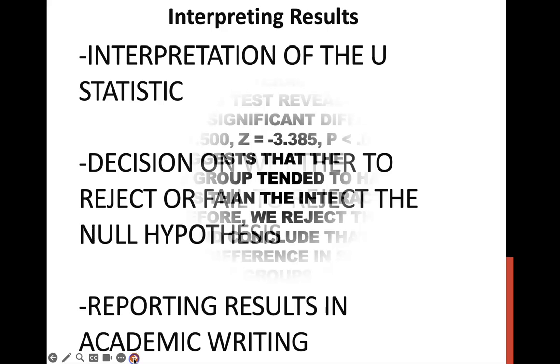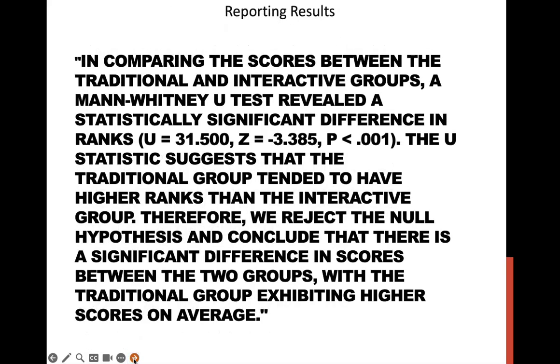Then we'll have a little short write-up. In comparison of the test scores between the traditional and interactive groups, the Mann-Whitney U test reveals a statistically significant difference in ranks, and you have the statistical information here with the U-statistic. The traditional group tended to have higher ranks than the interactive group. Therefore, we reject the null hypothesis and conclude that there is a significant difference, and that the traditional group exhibited highest scores on average.